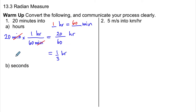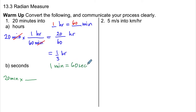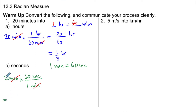In part B, we want to convert the same 20 minutes into seconds. We'll come up with a conversion factor: 1 minute equals 60 seconds. We put minutes in the denominator and seconds in the numerator, so 60 seconds equals 1 minute. The value of that fraction is 1. Minutes divided by minutes is 1, and we're left with 20 times 60 times seconds divided by 1, which gives us 1,200 seconds.